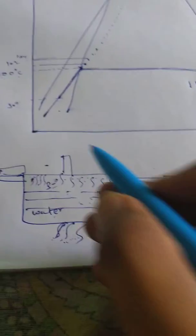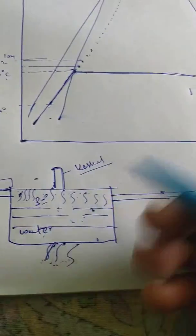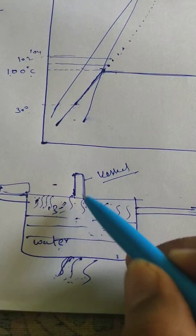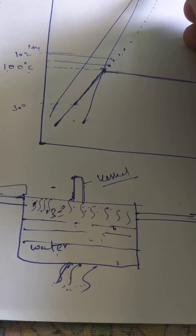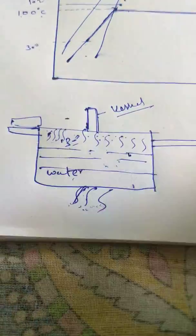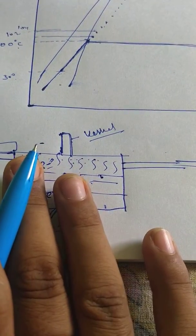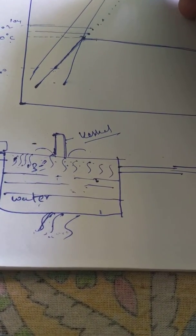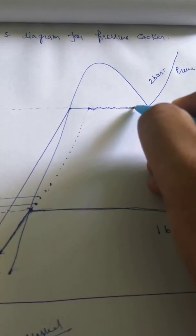Eventually the pressure reaches 2 bar, which corresponds to the weight of the vessel lid. At 2 bar, the pressure is sufficient to lift the vessel. So no more pressure will build up beyond 2 bar, because once it exceeds that, the steam lifts the vessel, steam escapes, and the pressure drops again. This creates fluctuation rather than a straight line on the TS diagram.